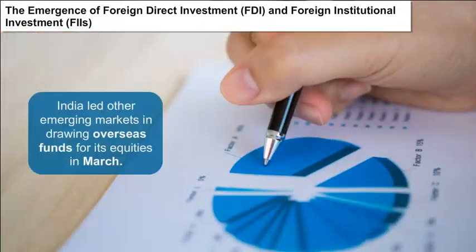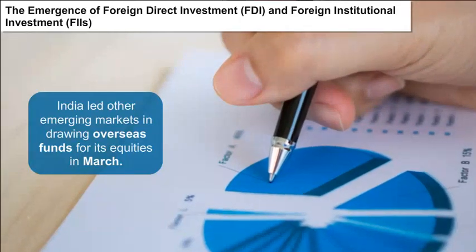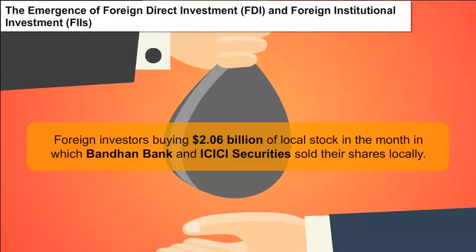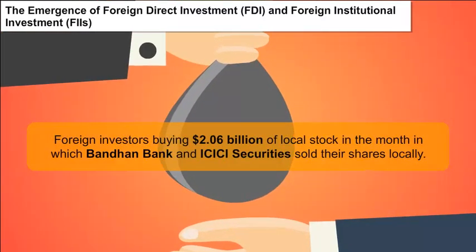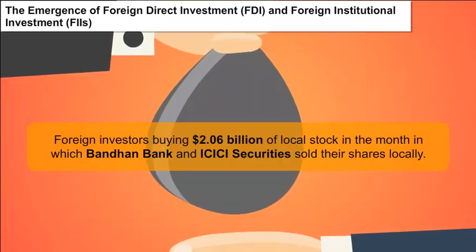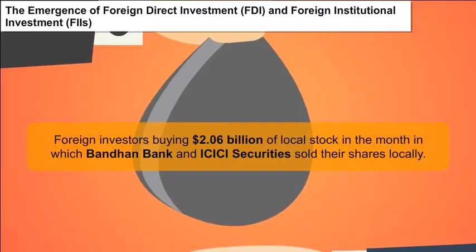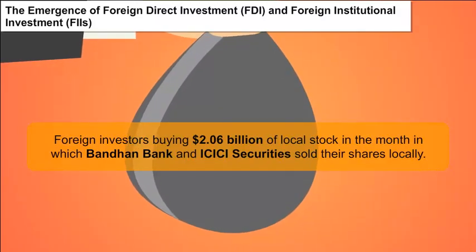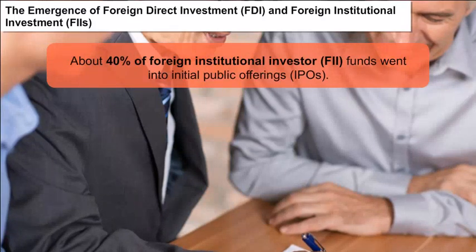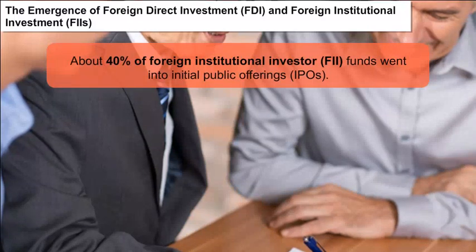India led other emerging markets in drawing overseas funds for its equities in March, with foreign investors buying $2.06 billion of local stock in the market, in which Bandhan Bank and ICICI Securities sold their shares locally for the first time. About 40% of Foreign Institutional Investor (FII) funds went into Initial Public Offerings (IPOs).